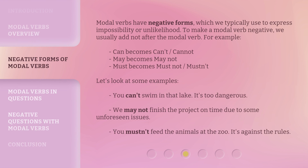Modal verbs have negative forms, which we typically use to express impossibility or unlikelihood. To make a modal verb negative, we usually add 'not' after the modal verb. For example, 'can' becomes 'can't' or 'cannot.' 'May' becomes 'may not.' 'Must' becomes 'must not' or 'mustn't.'